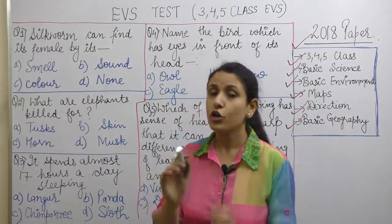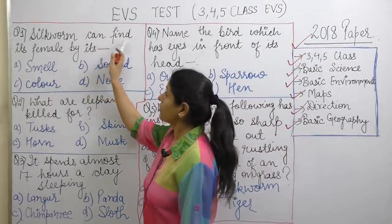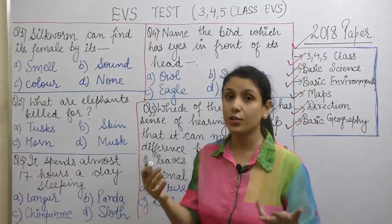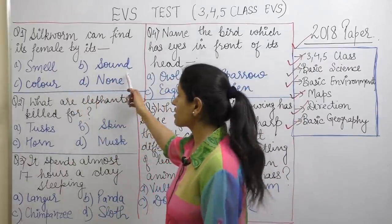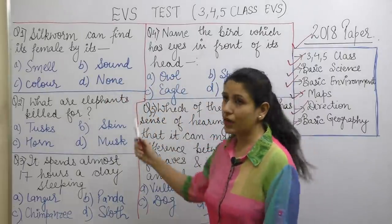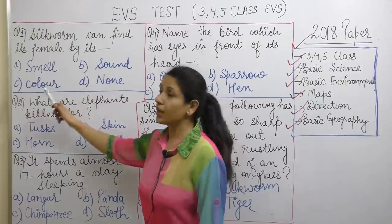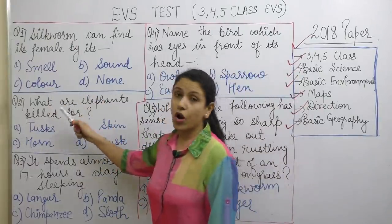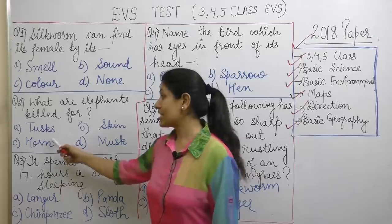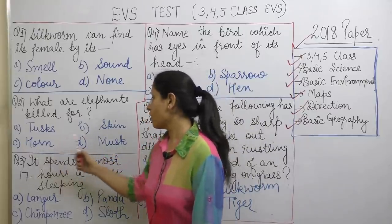I will read out all the questions. Whatever your answers are, write them in your copy. First question: Silkworm can find its female by its — by smell, by sound, by color, or none of the above? Write the answer in your copy. Next question: What are animals killed for? Tusk, skin, horn, or musk?